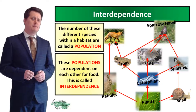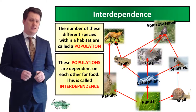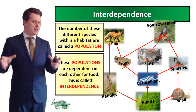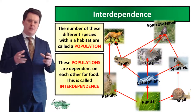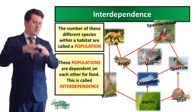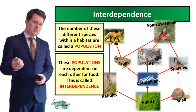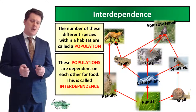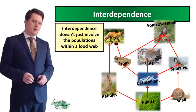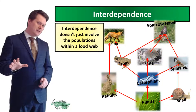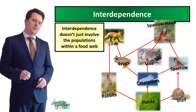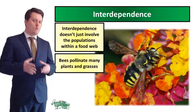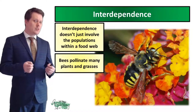Next we're going to look at something called interdependence. The number of each different species within a habitat is called a population — so you'll have a population of foxes, a population of sparrowhawks. A collection of all of these populations is called a community. These populations are dependent on one another for their food, and this is an example of interdependence. But interdependence doesn't just involve the populations within a food web — bees pollinate many plants and grasses, and without them our producers cannot reproduce.